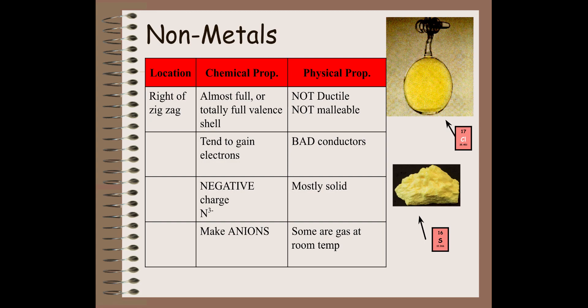What about non-metals? They're to the right of that zigzag stairway. Their chemical properties are pretty much the opposite of metals. Instead of having only a few valence electrons, non-metals are almost full — they have 5, 6, 7, or 8 valence electrons. They tend to gain electrons because gaining electrons makes them more stable, making them more like a noble gas. Because they're gaining electrons, they have a negative charge and form anions.